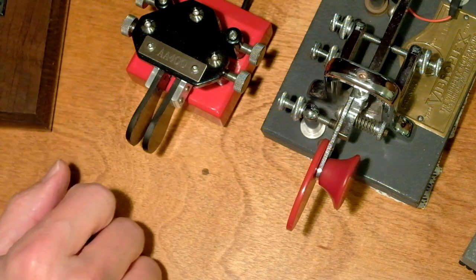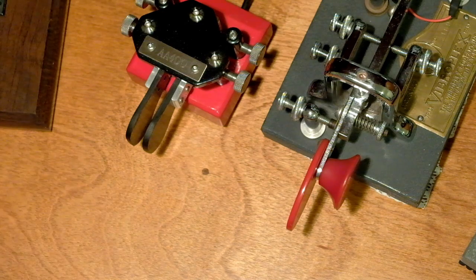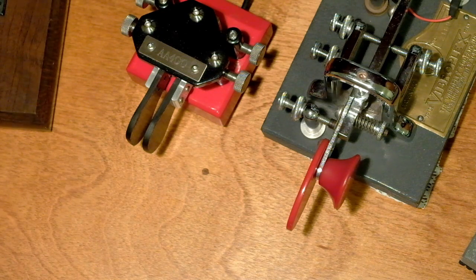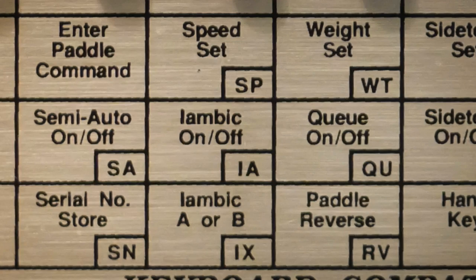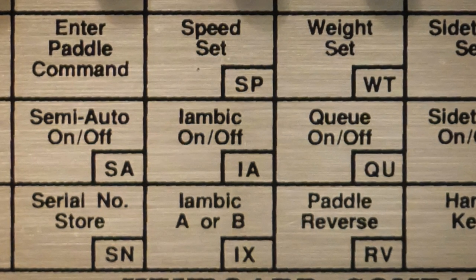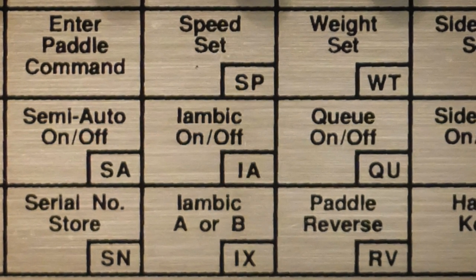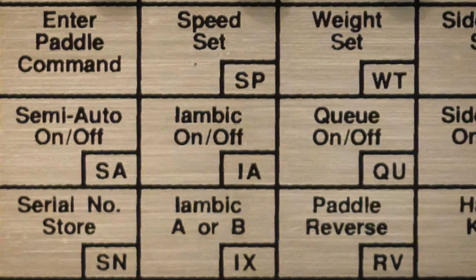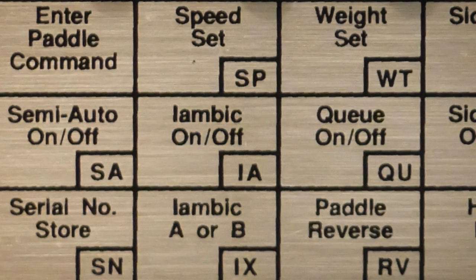So we're going to talk about squeeze keying and how it relates. I've got a keyer here and it has mode A and mode B. That's mode B. That's mode A. Okay, what is the difference in mode A and mode B?